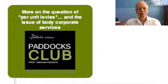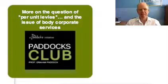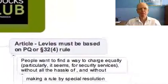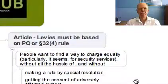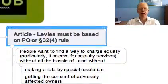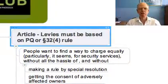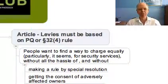Good afternoon and welcome to another Paddocks Club tutorial. I'm going to deal with the question of per unit levies and the issue of body corporate services today. I recently wrote an article dealing with levies, and the point was that levies must be based either on the participation quotas or on a rule made in terms of section 32.4 of the Act.